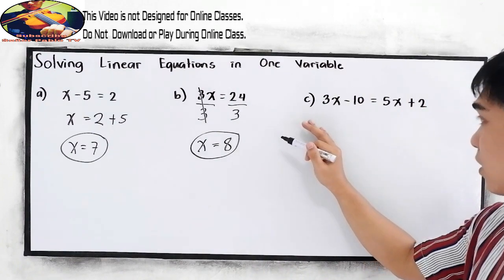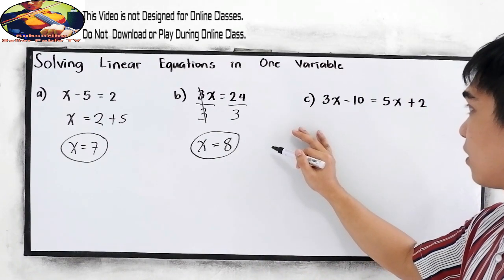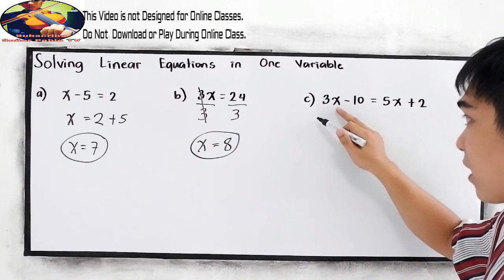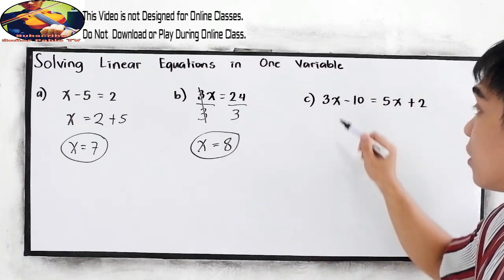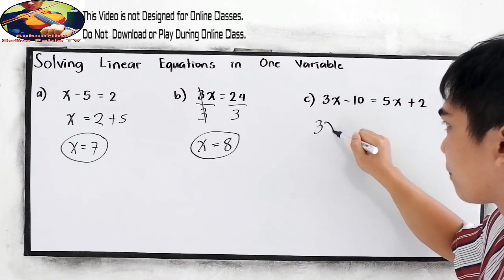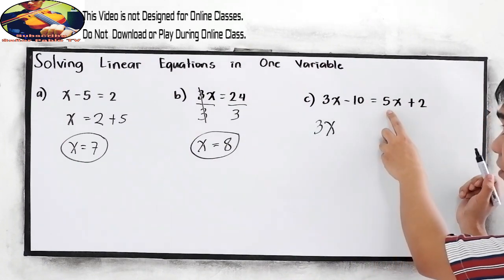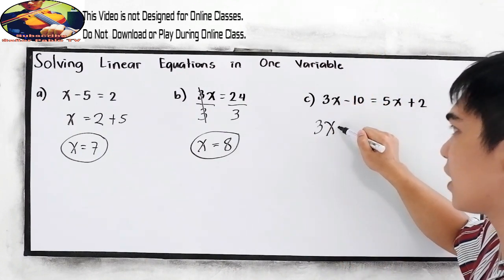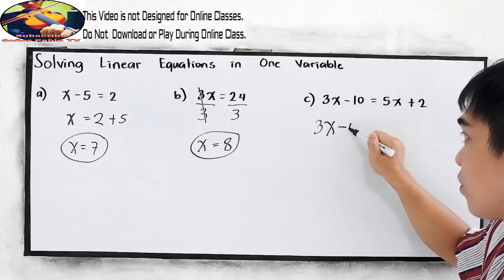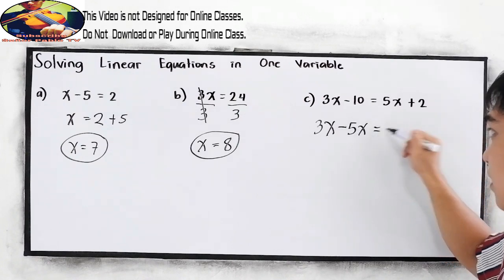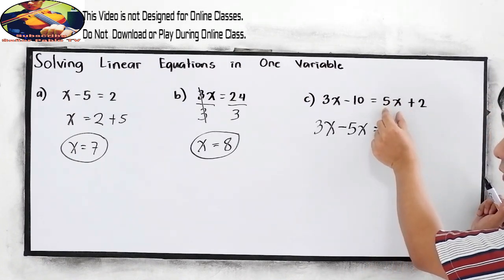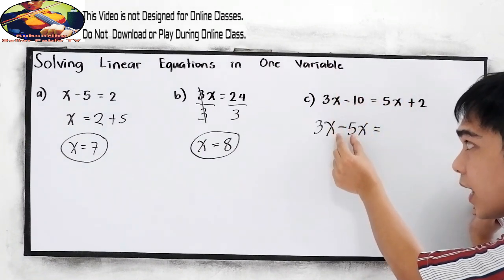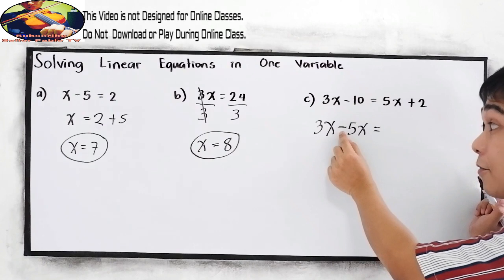Letter C. We need to combine like terms to find the value for x. Copy 3x. The 5x must be on the left side, so move it to the left and change the sign — it will become negative 5x. Positive 5x is located on the right side of the equation; going to the left gives us negative 5x.